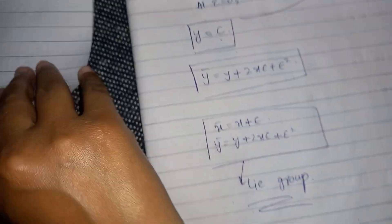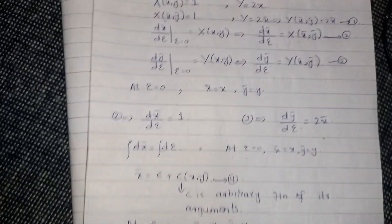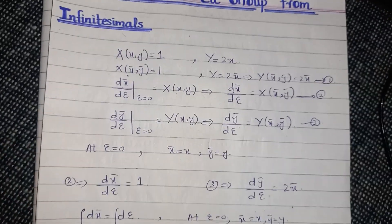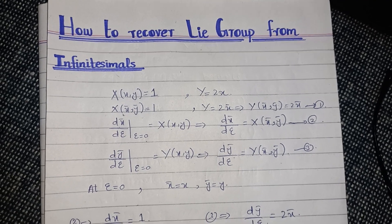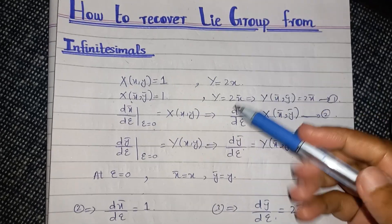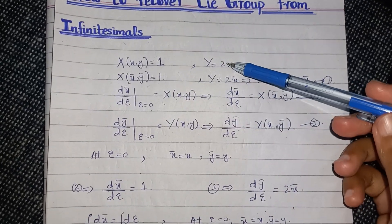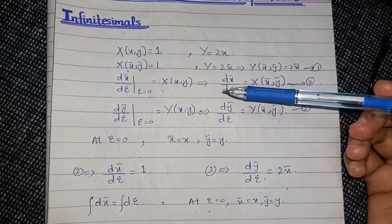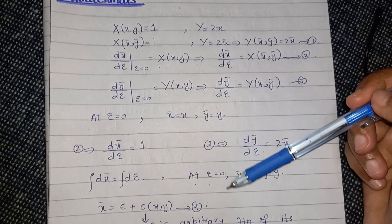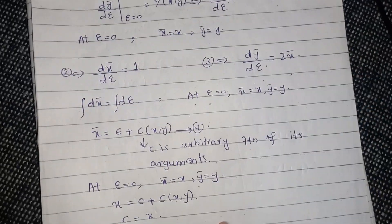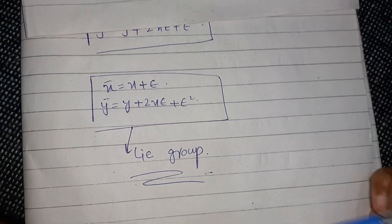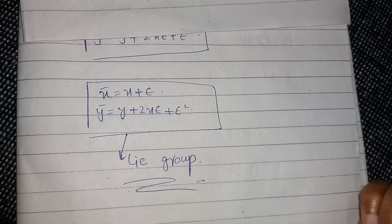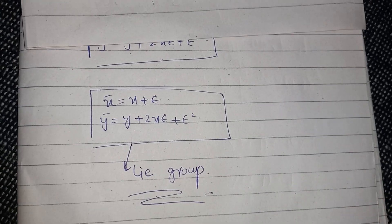In this lecture I have discussed how, if we are given the infinitesimals capital X and capital Y, we can use a complete procedure to find the general form of a Lie group. Thank you so much.